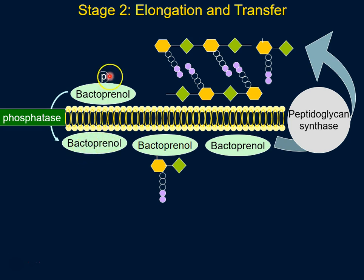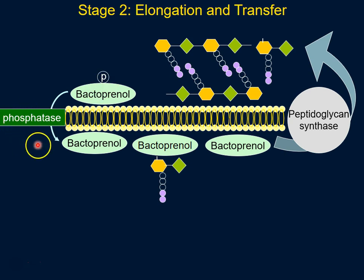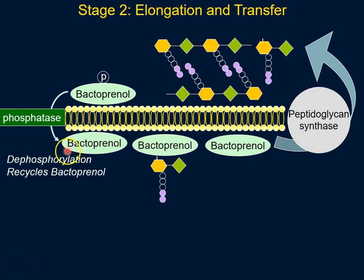This recycling is done by an enzyme known as phosphatase, which removes the phosphate that was left when the sugar complex was removed from bactoprenol. That restores bactoprenol to its original state.